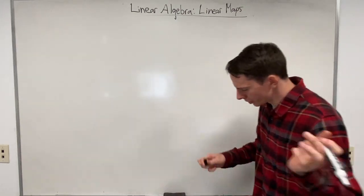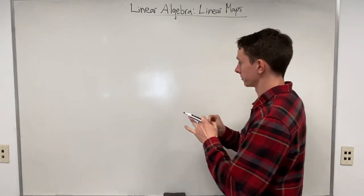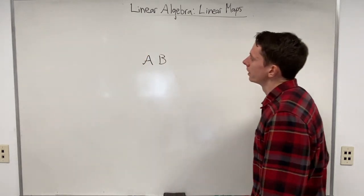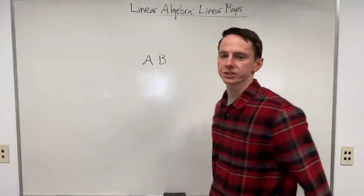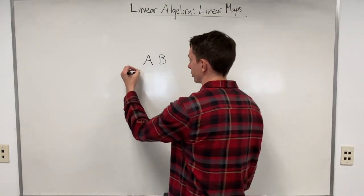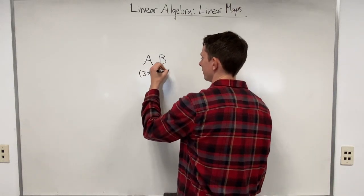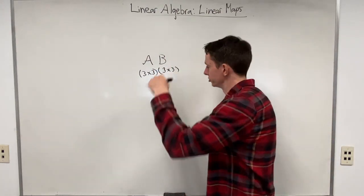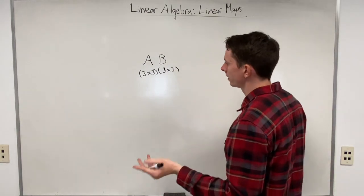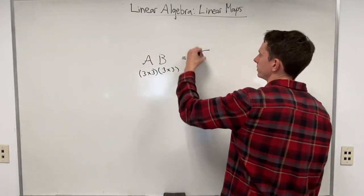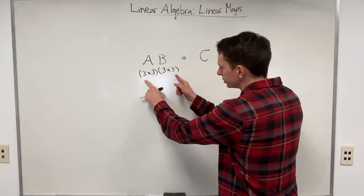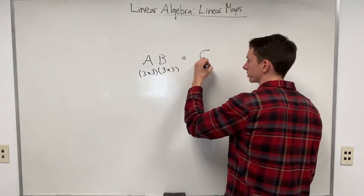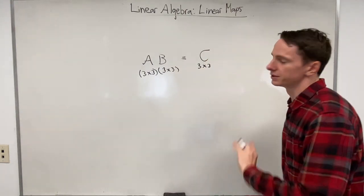In the last video we talked about multiplying two matrices together — call them A and B. To keep this intuitive, let's say they're both three-by-three matrices, so we're working in R3. The inner dimensions match, which means we can multiply them, and the resulting output matrix C is going to have the dimensions of the outer two dimensions — also three-by-three.